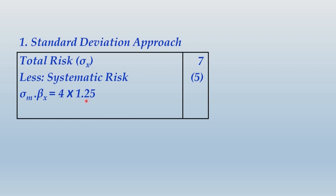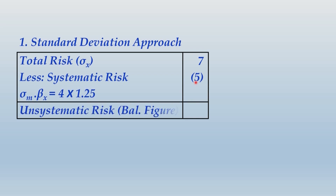Systematic risk equals sigma M times beta X = 4 × 1.25 = 5%. The logic: market standard deviation is 4%, indicating the absolute risk of the market. Your stock's beta is 1.25, meaning the risk of your stock is 1.25 times market risk, so systematic risk is 5%. Since actual total risk is 7%, unsystematic risk as the balancing figure is 7% − 5% = 2%.